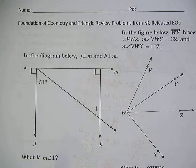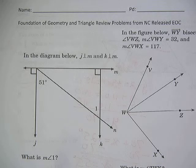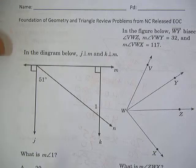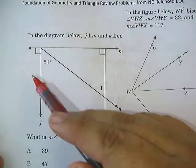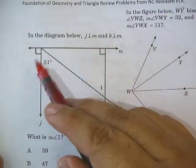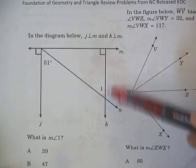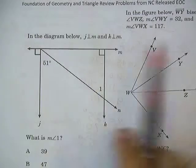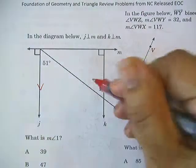Now we move on to page 4, which says foundation of geometry and triangle review problems. Looking at this first problem here, they say J is perpendicular to M and you can see they put a little right angle there. K is perpendicular to M. If you have two lines that are perpendicular to the same line, these lines are parallel.